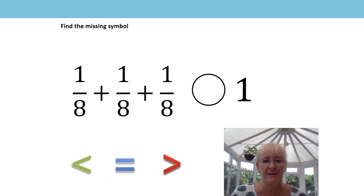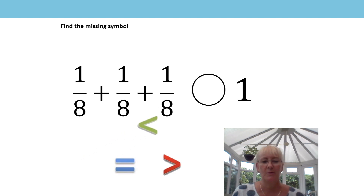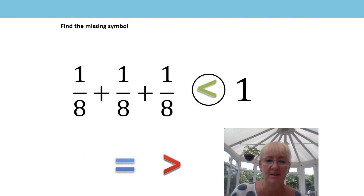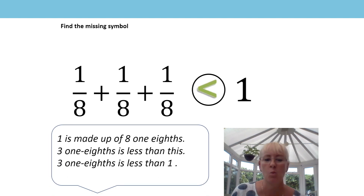A little bit different this time. What about this one? Can you use your reasoning again to decide on the missing symbol? Three one-eighths is less than one, because one is made up of eight one-eighths and three one-eighths is less than this. So three one-eighths is less than one. Well done if you got that.